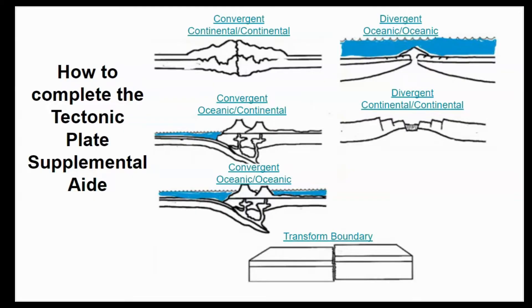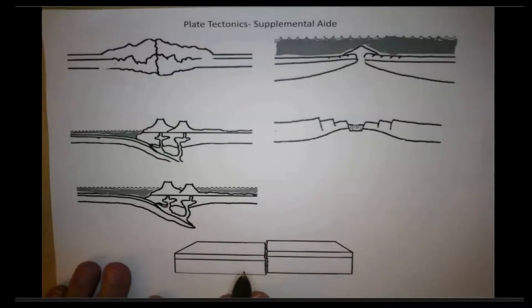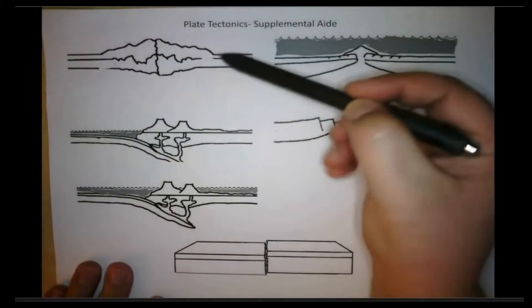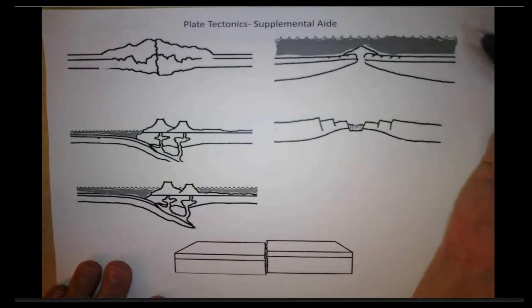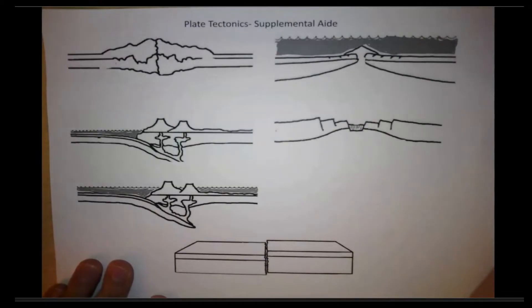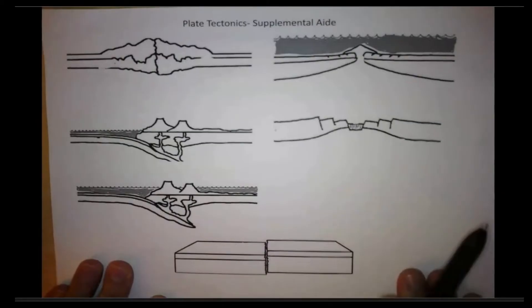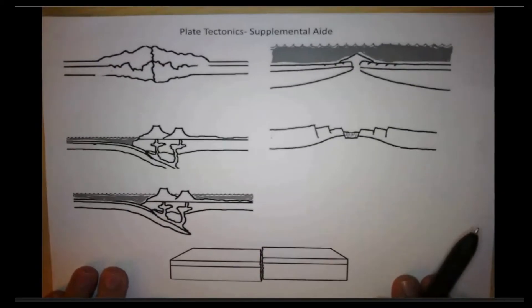You're going to need something to write with so you can follow along with me. So here we have our supplemental aid paper. These three images are our different convergent boundaries. These two are our two divergent boundaries, and then this is our transform. These are the different ones that we'll be going over today.